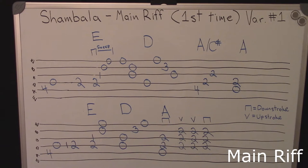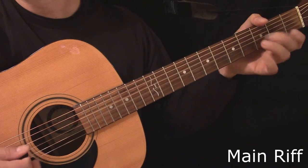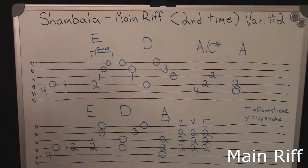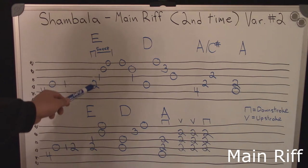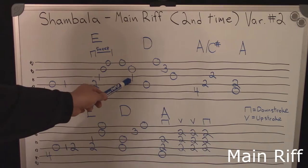Here's the tablature for the main riff the first time it appears in the song. Here's the tablature for the second variation of the riff. When I listen to it, you hit this first fret note here, and then the second fret note is part of the sweep. Also, you're holding the E chord a little longer — so instead of hitting an open note here, you're hitting still that first fret note.